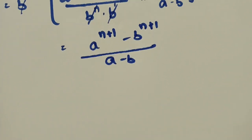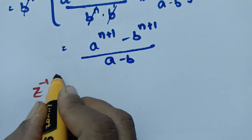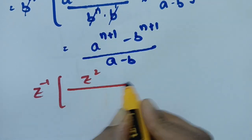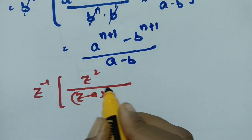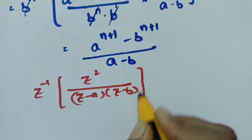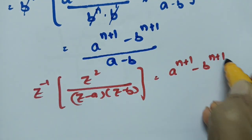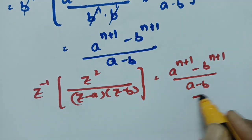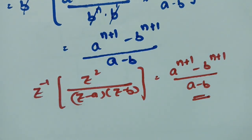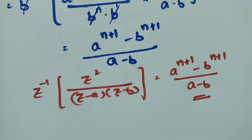Therefore, the inverse Z transform of Z squared by (Z minus A) into (Z minus B) is equal to (A power n+1 minus B power n+1) divided by (A minus B). This is the final answer. Thank you so much for watching — this is a most important problem. I will upload one more important question, so have a look at it.